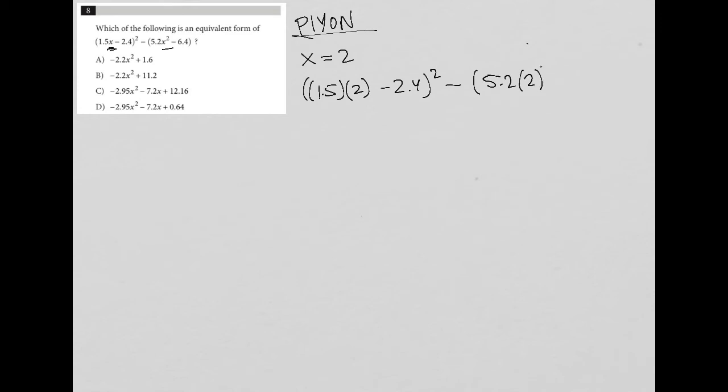now times 2 squared and minus 6.4. So 1.5 times 2 is 3. So I have 3 minus 2.4 and squared and minus. And I have 5.2 times 2 squared is 4. So 5.2 times 4 minus 6.4.